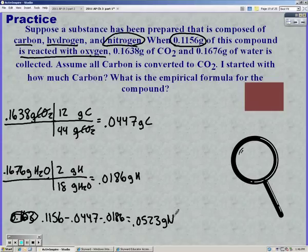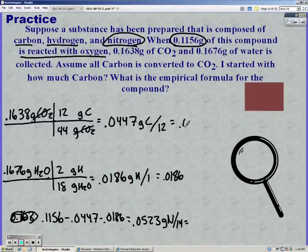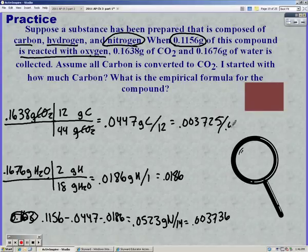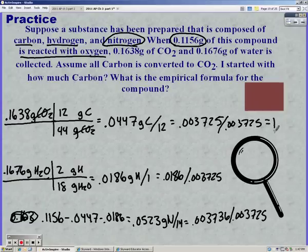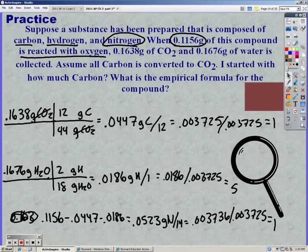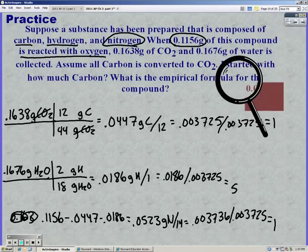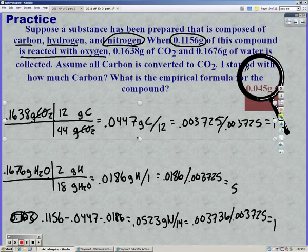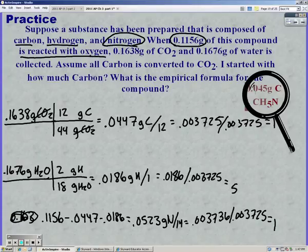Now it's exactly like the other two problems that we've been solving. We divide by our molar mass. Then we divide by the smallest, which was 0.003725. And that gives us whole numbers, so we're done. So the first part of the question said, well, how much carbon is produced? So we had 0.045 grams, which is what we got earlier. And our empirical is CH5N.